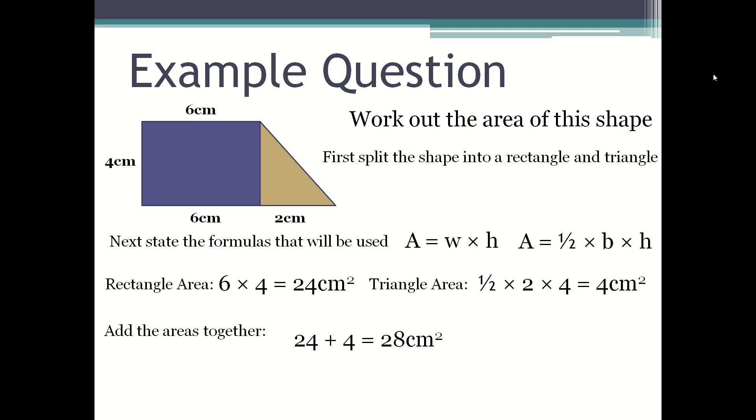Twenty-four plus four equals twenty-eight centimeters squared. Therefore, the area of the compound shape is twenty-eight centimeters squared.